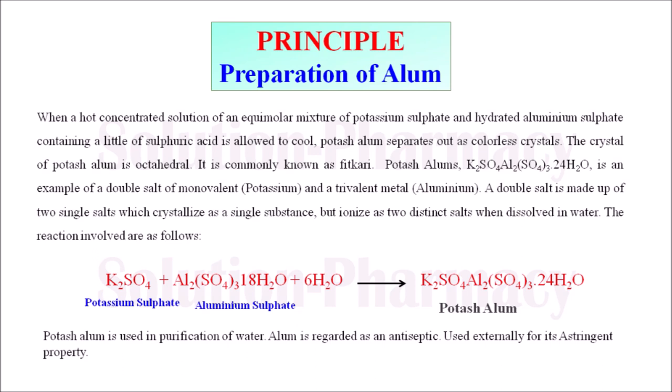This is the principle of preparation of potash alum. The crystal of potash alum is octahedral in shape and is commonly known as fitkiri. Potash alum is an example of a double salt — a double salt of a monovalent and a trivalent metal. Here the monovalent metal is potassium.